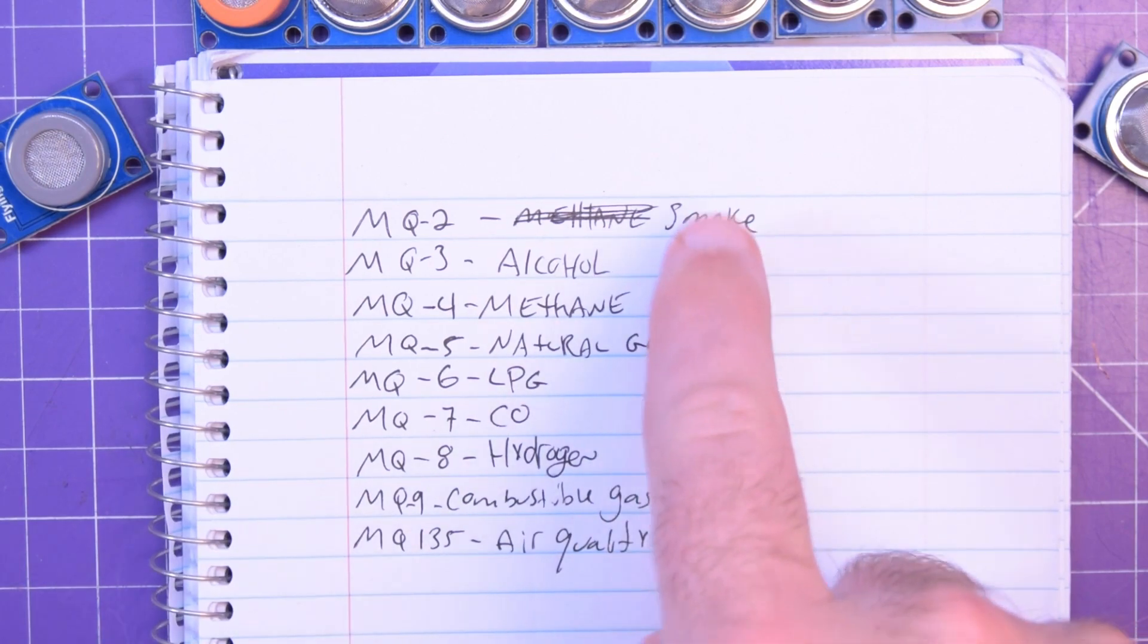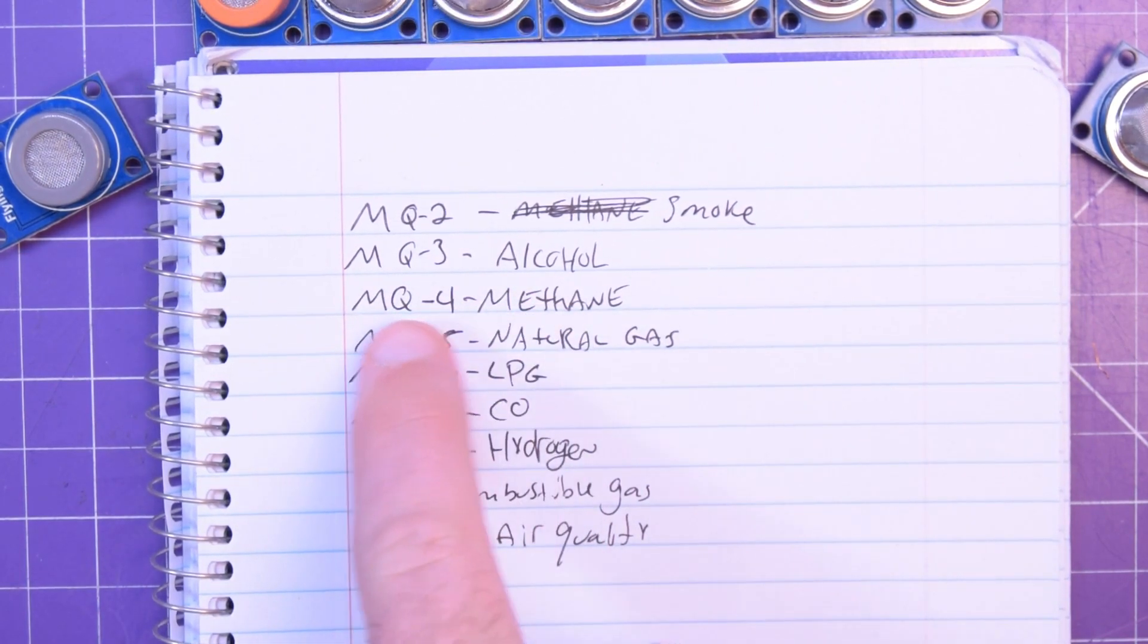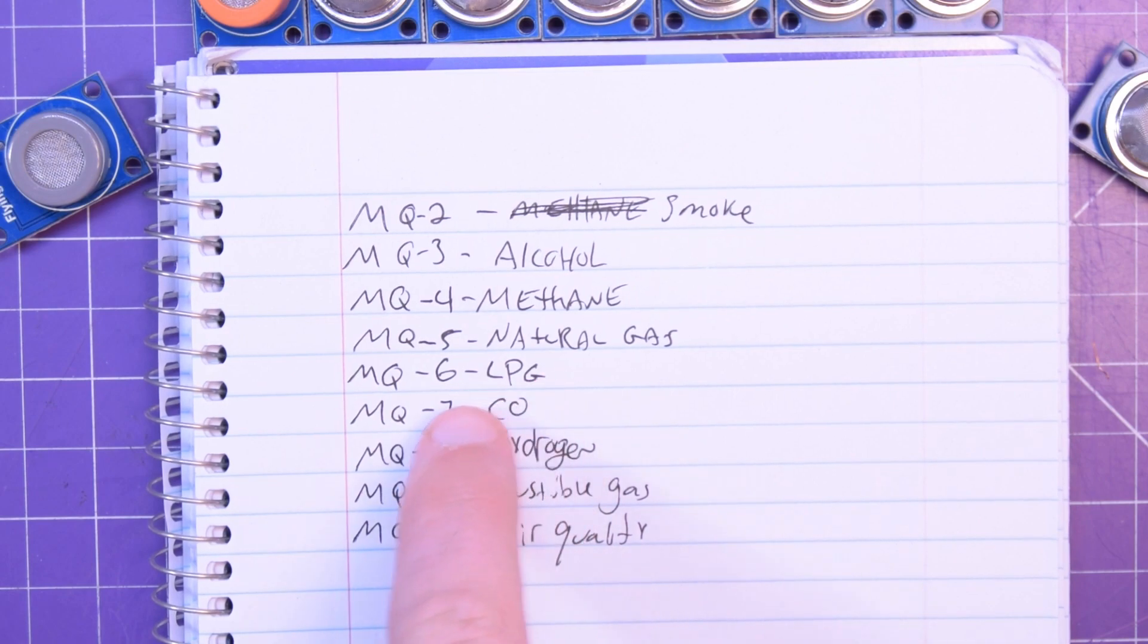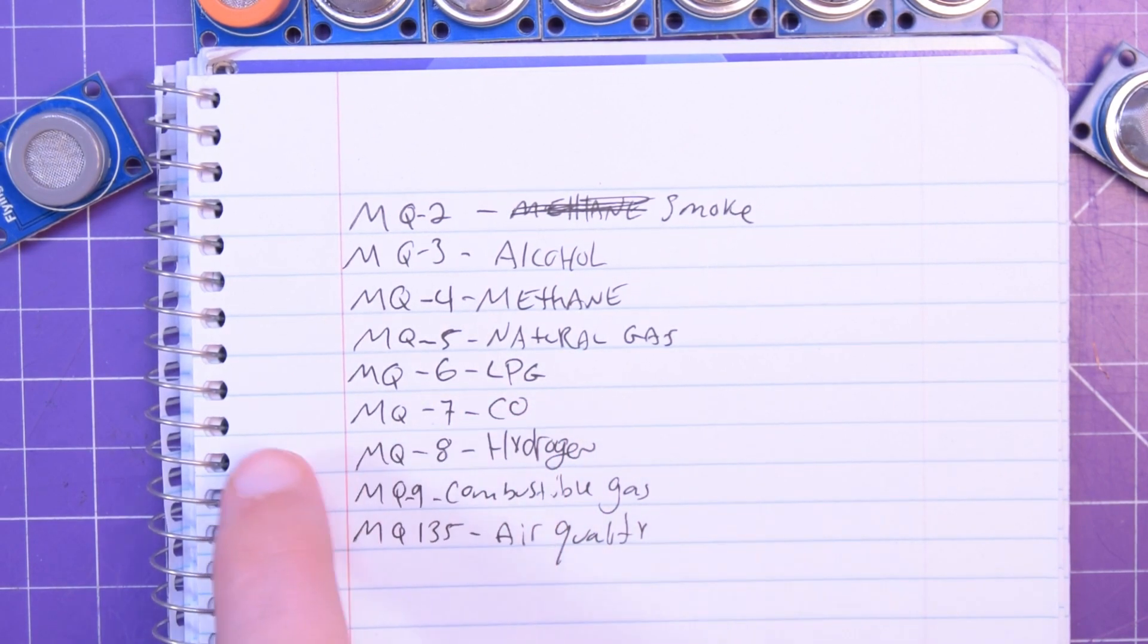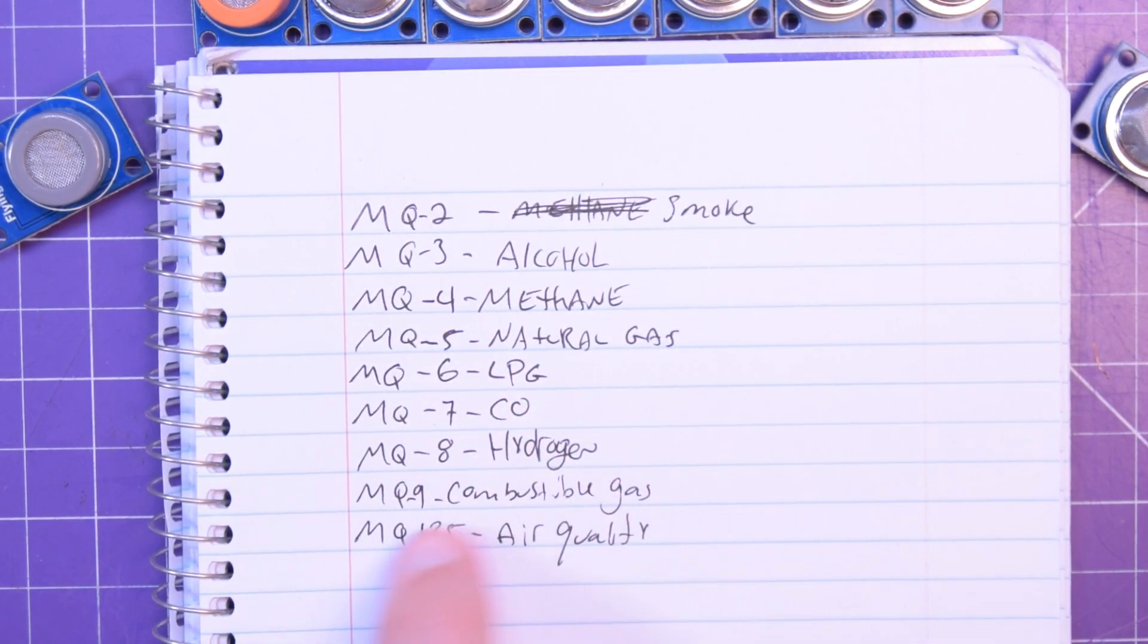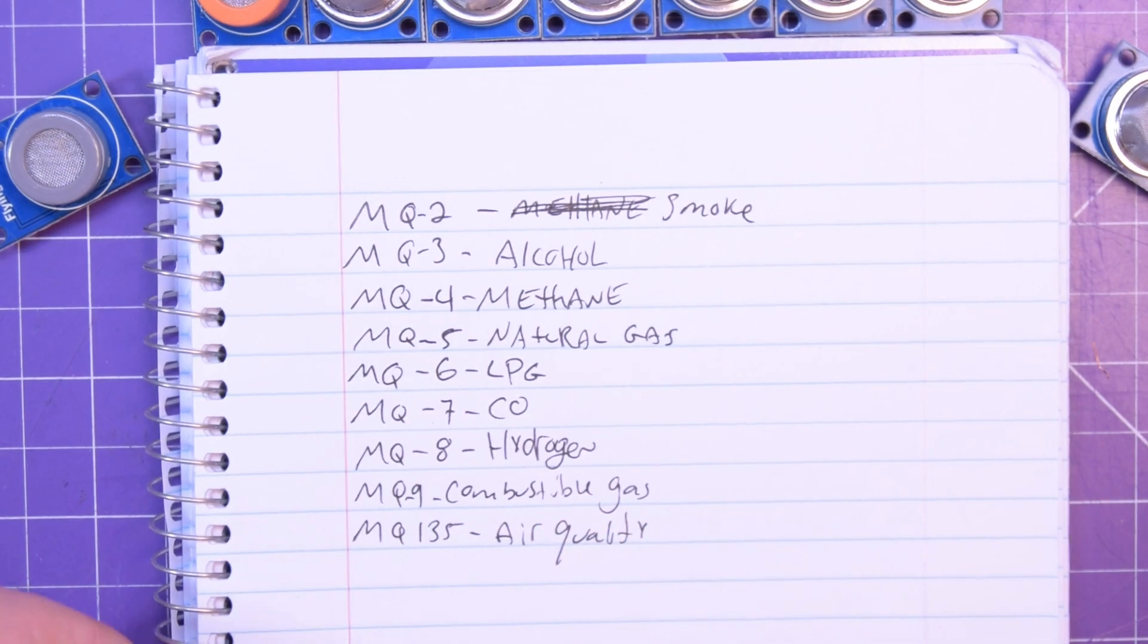So MQ2 is a smoke sensor, alcohol, methane, natural gas, LPG (that's liquid propane), carbon monoxide, hydrogen, combustible gas, and air quality.